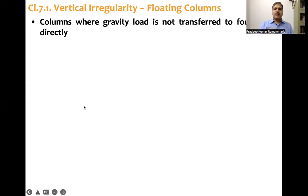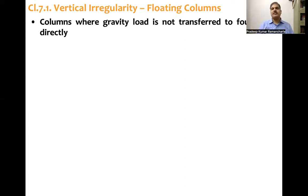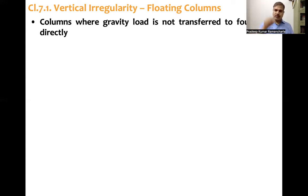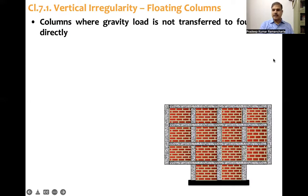So what is the definition of a floating column? A floating column is one where gravity load is not transferred to the foundation directly. A column normally goes from bottom to top, but a floating column means the bottom portion is not there — the load is not directly transferred through gravity to the foundation.